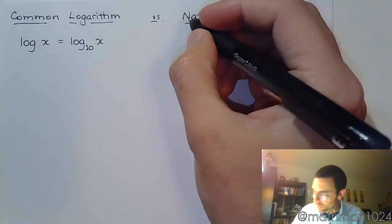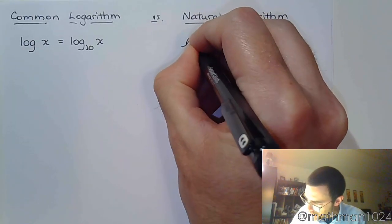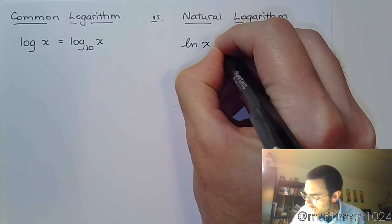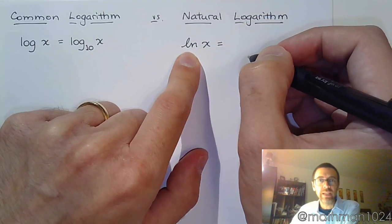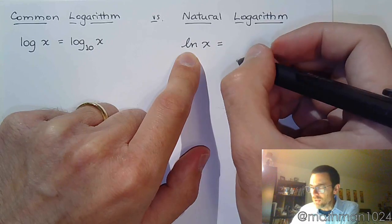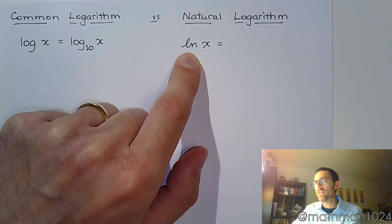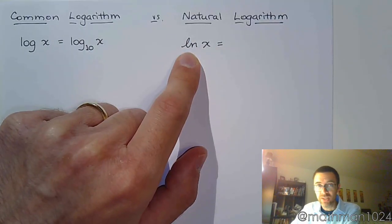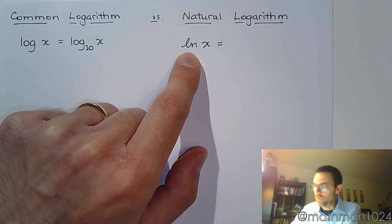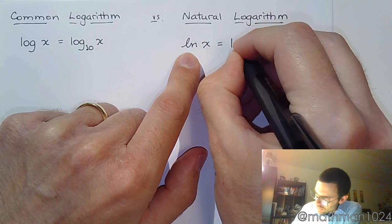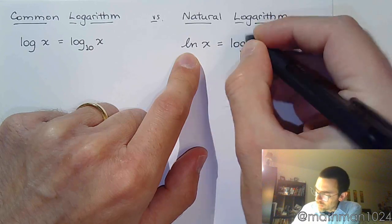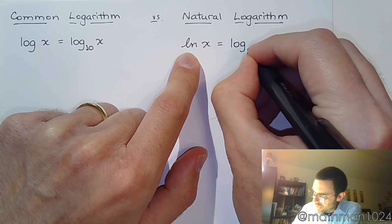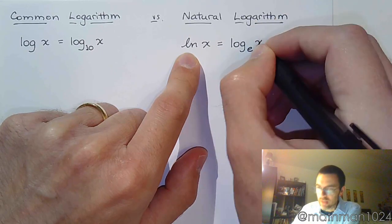Then you've got the natural logarithm. The natural logarithm looks like this - ln. I think I do that in cursive so that the L that I draw does not get confused for a 1 or anything else. I want to make sure that what I write is very clear for you guys. So this means log base e of x.